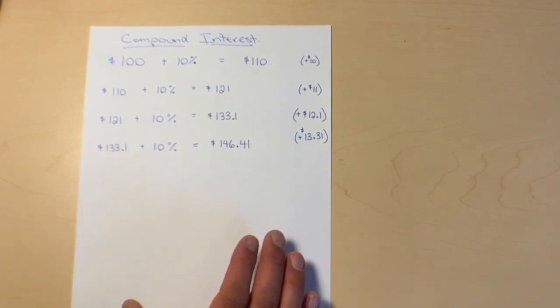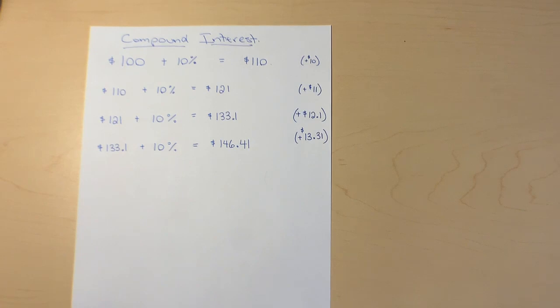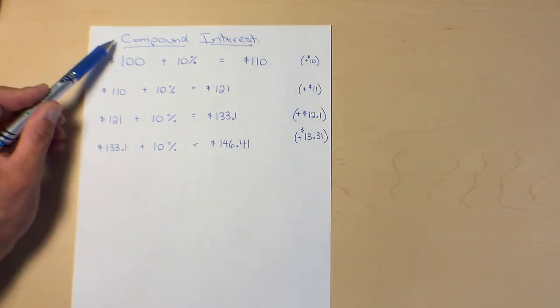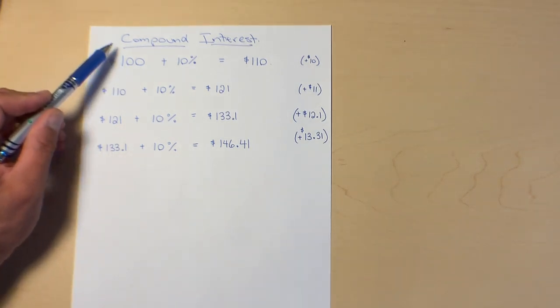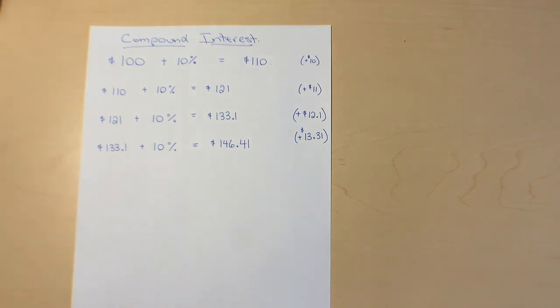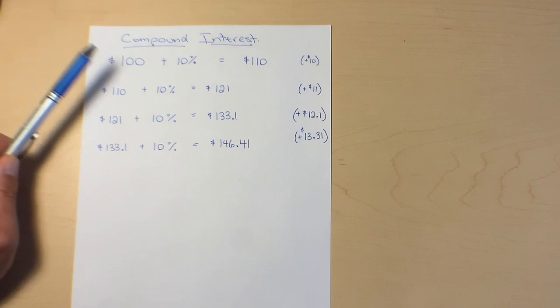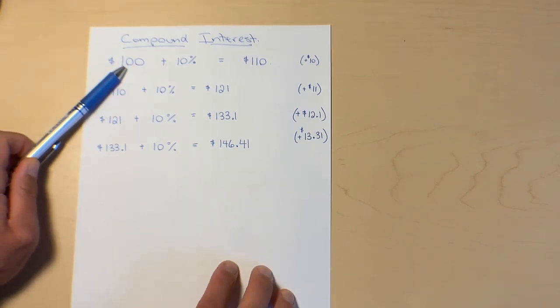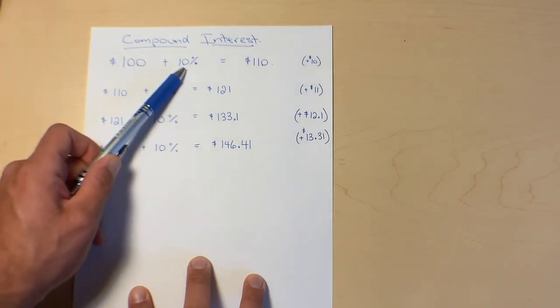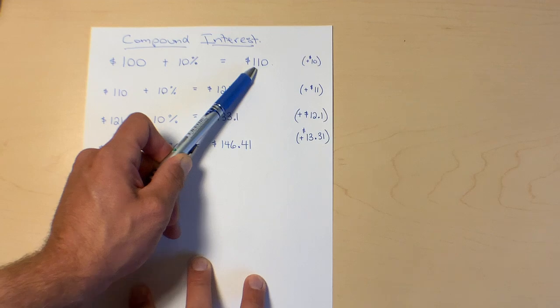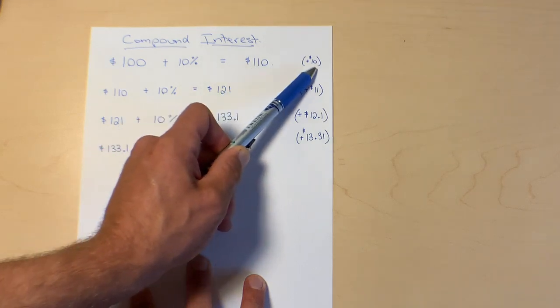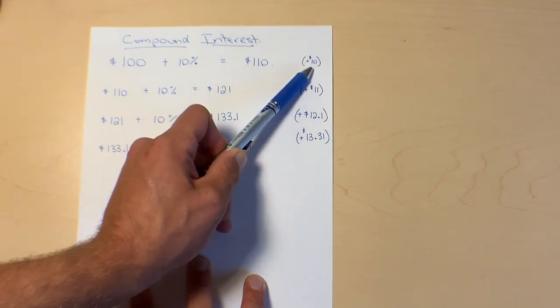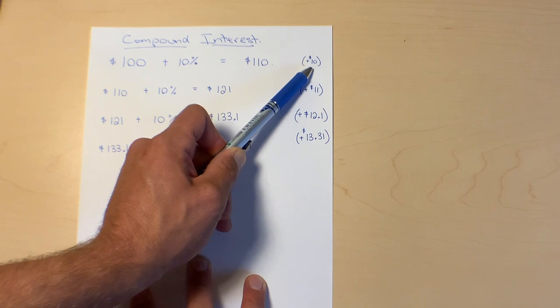And then how to calculate compound interest. So compound interest is essentially like interest building on top of interest and principle. I've used an example here of a hundred dollars. So let's say we invest a hundred dollars and this year we earn 10% on that hundred dollars. So at the end of the year we're going to have $110. That's going to give us a gain of 10 bucks.